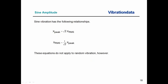For pure sine vibration, the RMS times the square root of 2 equals the peak value, and the peak divided by the square root of 2 equals the RMS — neat and tidy relationships. However, these do not apply to random vibration. When we get to random vibration, we'll be in the realm of probability and statistics, discussing 3-sigma, 4-sigma, and even 5-sigma peaks. This set of equations applies only to pure sine.